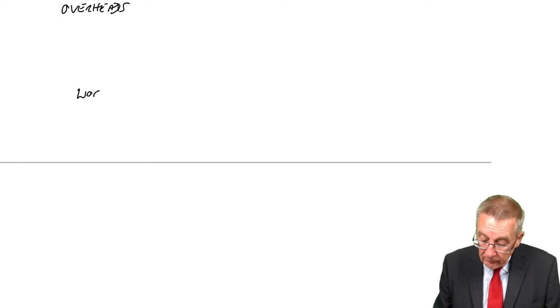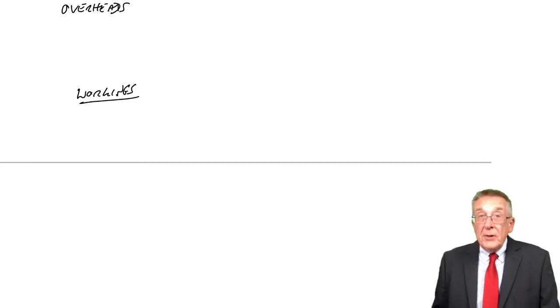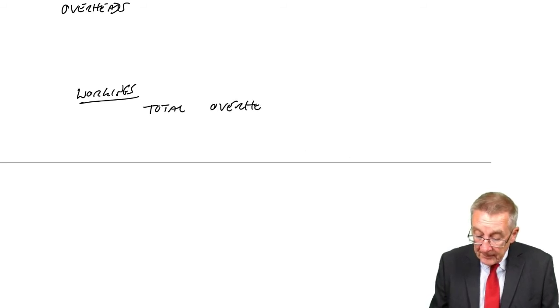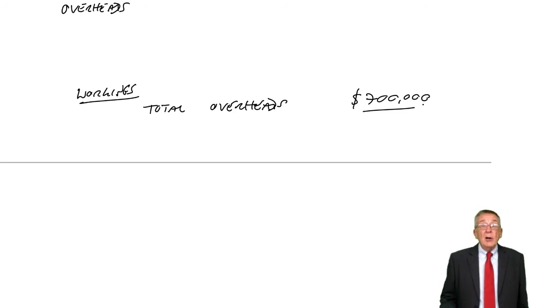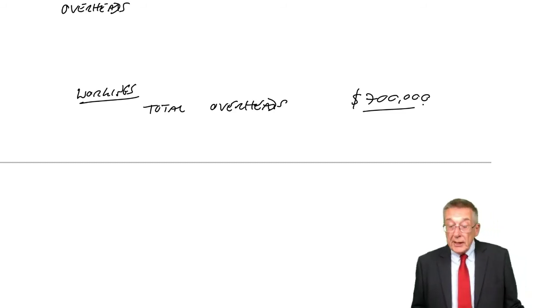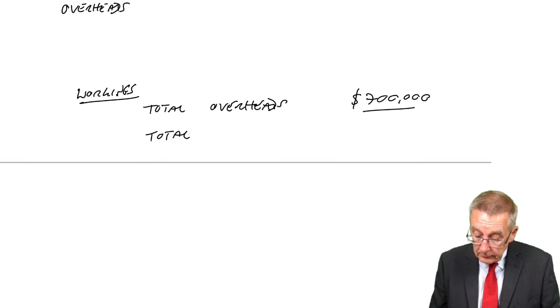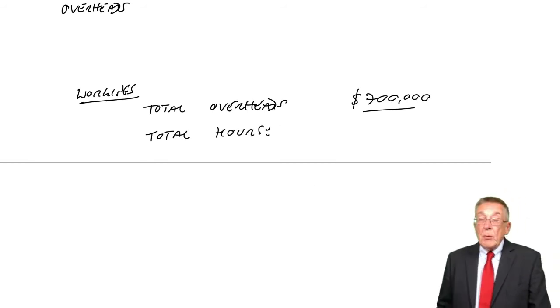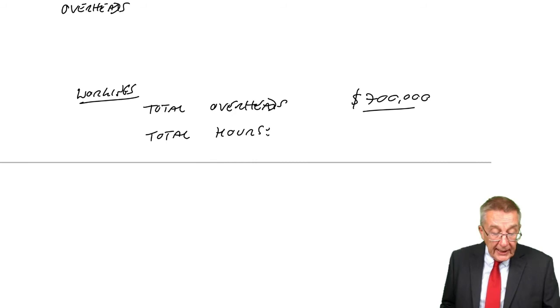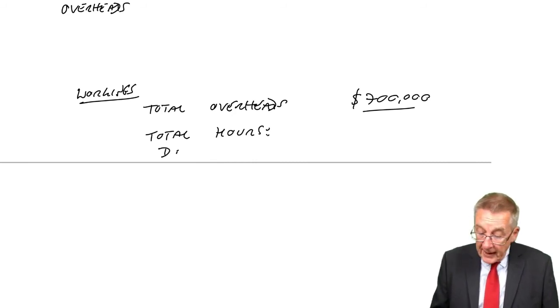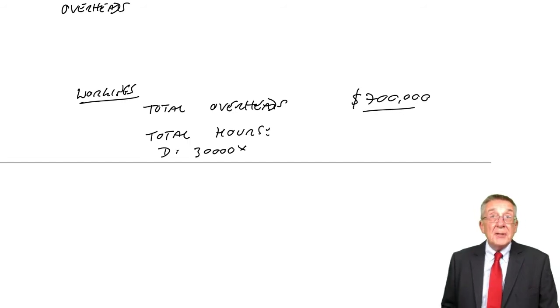We'll need a little bit of workings. We say, well, what's the total overheads? No problem, 700,000. We then say, how many hours are we working in the factory? Well, remember, we're making two products. We're making desks, and desks we're making 30,000 units and how many hours does each desk spend in the factory? Four hours. So we're spending 120,000 hours making desks.